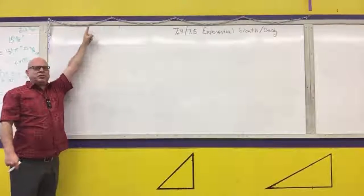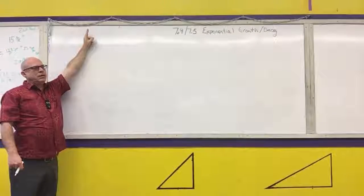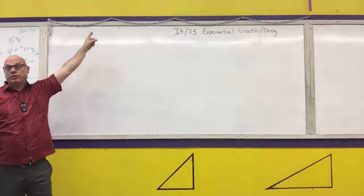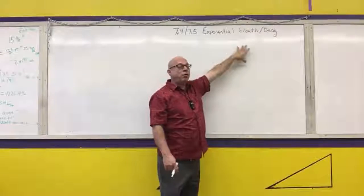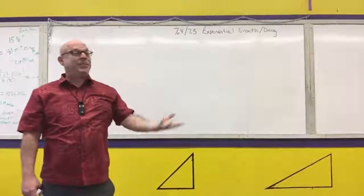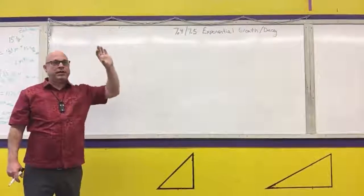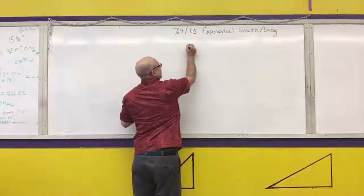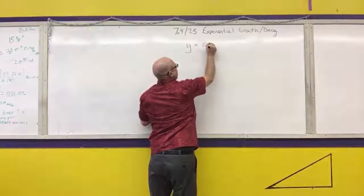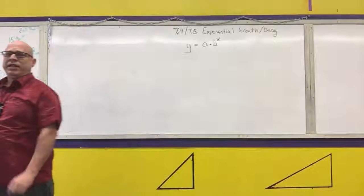In middle school, you learned that a linear function is y = mx + b. That's the generic form of a linear function. What we're going to do is come up with the generic form for exponential functions. In sections 7.1, 7.2, and 7.3, we already talked about exponents — that's where you have a number raised to a variable power. So instead of y = mx + b, we're going to have y = a times b to the x. This is our generic exponential function.